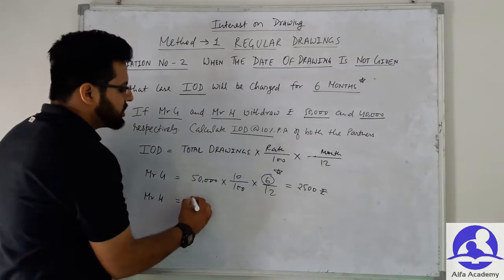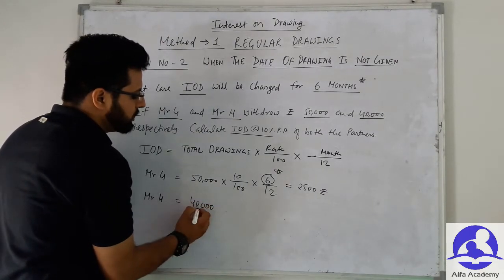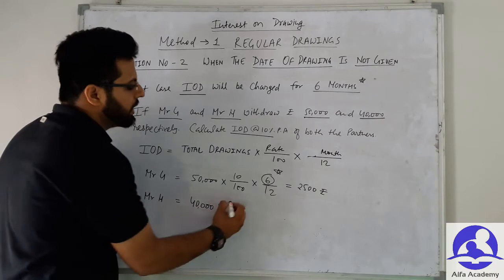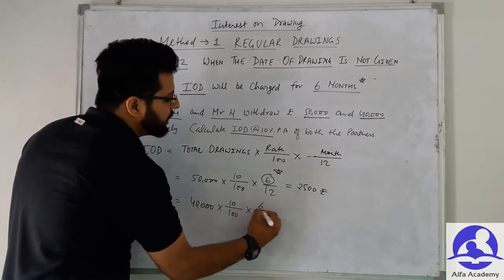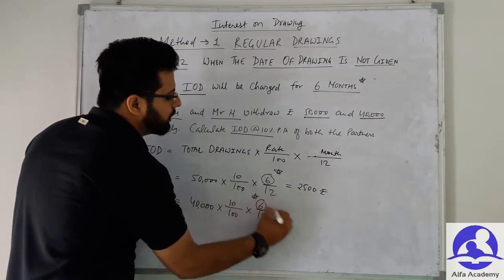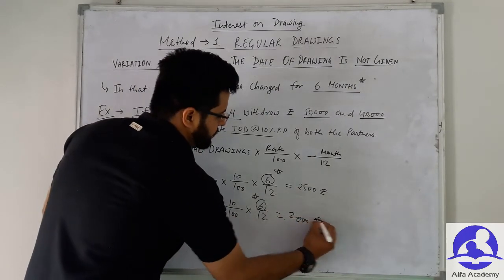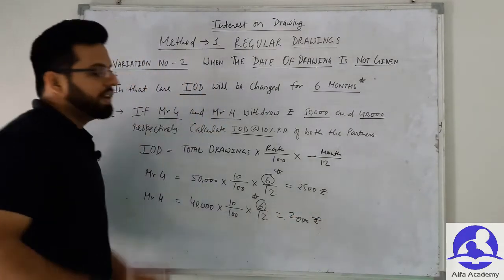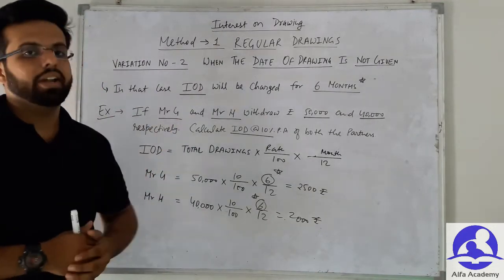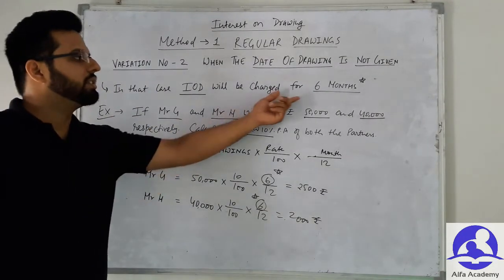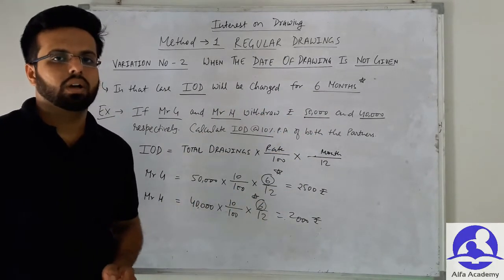Similarly, for Mr. H: 40,000 × 10/100 × 6/12. Since the date of drawing is not given, we use 6 months. The answer is 2,000 rupees. This is Variation Number 2 — when the date of drawing is not given, remember that 6 months' interest will be charged.